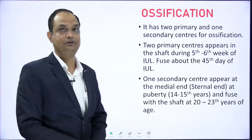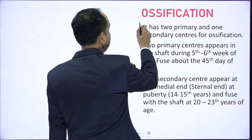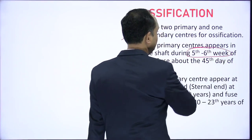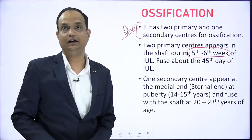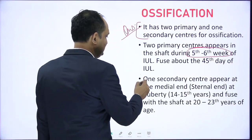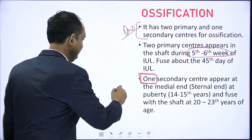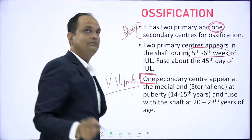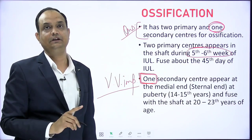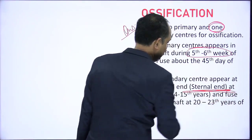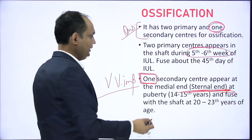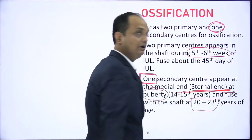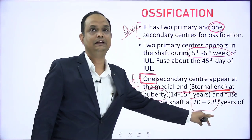Regarding ossification: the clavicle has two primary and one secondary center of ossification. The two primary centers appear at the fifth to sixth week of intrauterine life and fuse around the 45th day of intrauterine life. There is only one secondary center, and it is responsible for the medial end — this is a very important exam question. This secondary center appears at puberty, around 14 to 15 years, and fuses with the shaft at around 20 to 23 years of age, completing ossification by the end of the 23rd year.